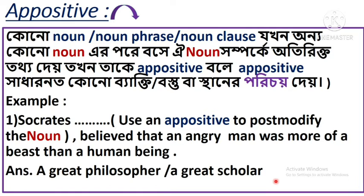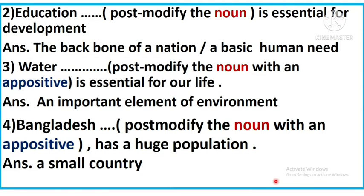Let's look at examples of appositive as post-modifier. 'Socrates is a great philosopher, a great scholar.' Here 'a great scholar' is an appositive modifying 'Socrates.' Similarly, 'Shakespeare, a great poet' — here 'a great poet' is an appositive, and it is the title or name added after the noun.